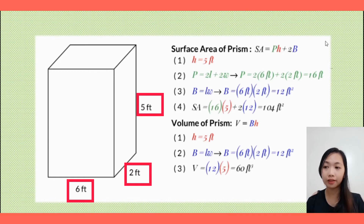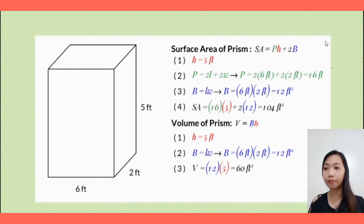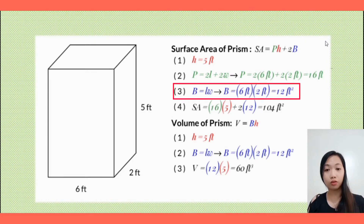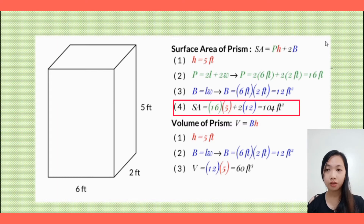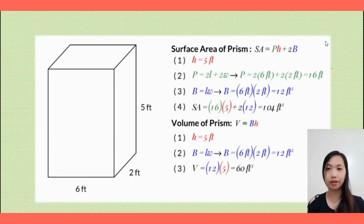Since the base is a rectangle, the base area equals length multiplied by width, so B = 6 × 2 = 12 square feet. Substituting into the total surface area formula, we have SA = pH + 2B = 16 × 5 + 2 × 12. Computing the values, the total surface area is 104 square feet. That is the surface area of the given prism.